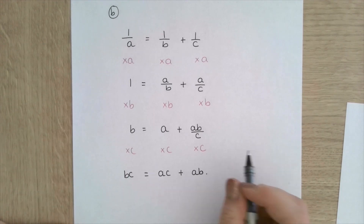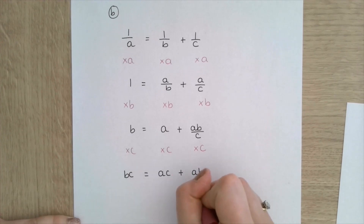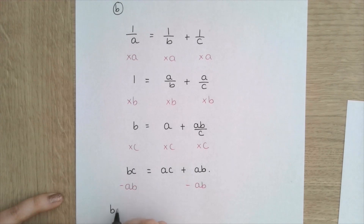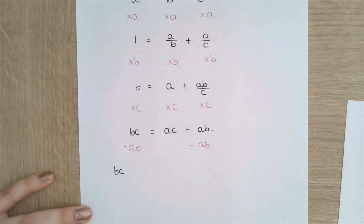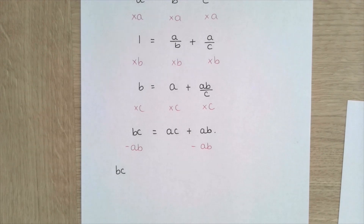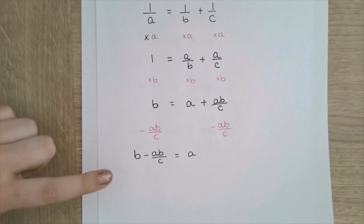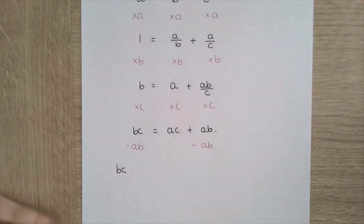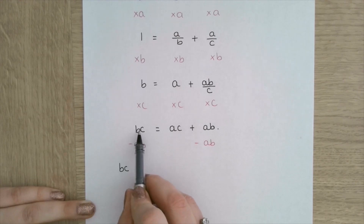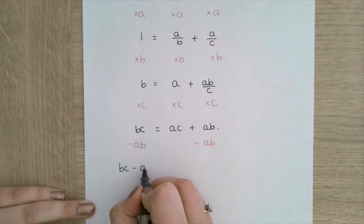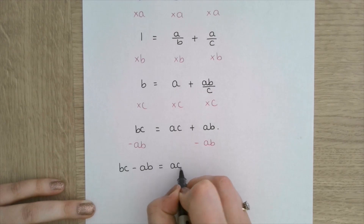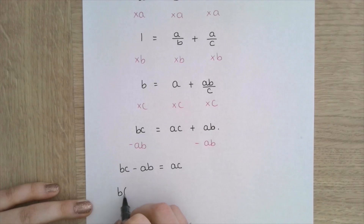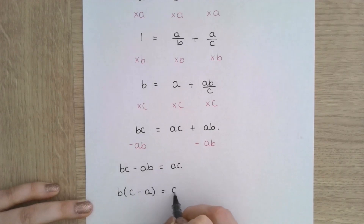Now I'm going to rearrange and subtract ab from both sides so that I've got all the b terms together. Sorry for that — it was just starting to get a bit ugly. You can still do it the way I had before, but this avoids getting really messy with that fraction. So I have bc minus ab which equals ac. I've now got all the terms that involve b, so I can factorize out the b: b brackets c minus a equals ac.